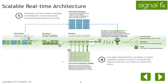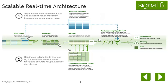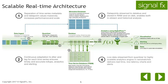The SignalFlow analytics engine makes the data available to charts and detectors for visualization and alerting. The separation of time series metadata and data point values massively increases performance and scale. The continuous adaptation to jitter and lag for each time series ensures timely and accurate roll-ups, analytics, and alerting. Having data points streaming to the data bus and storing them in RAM and on disk enables both in-stream and historical analysis.